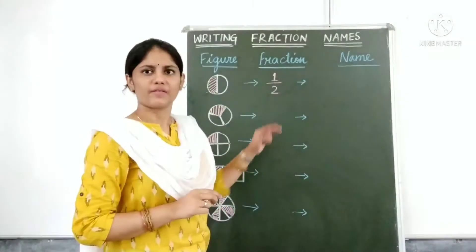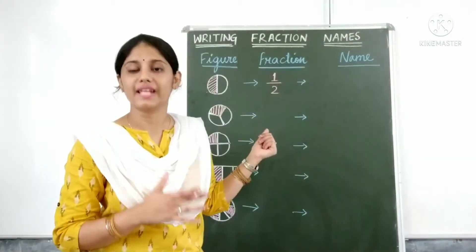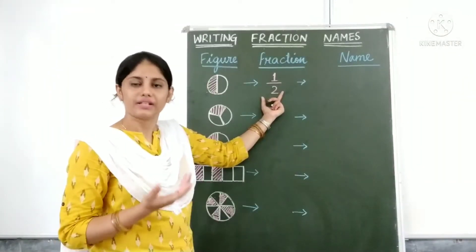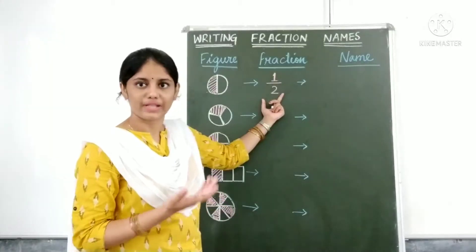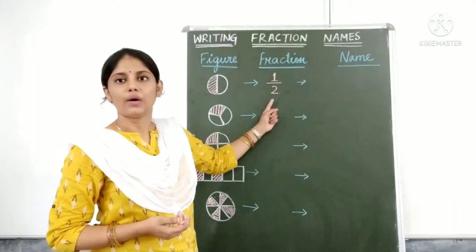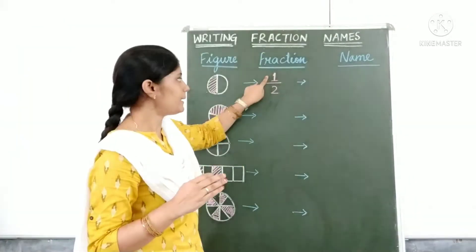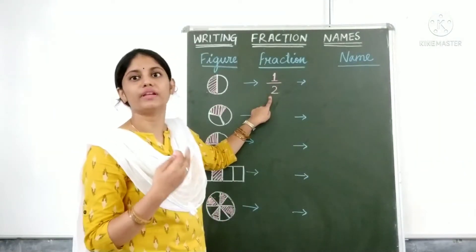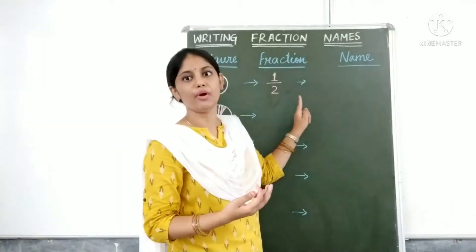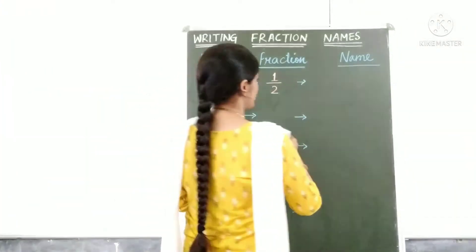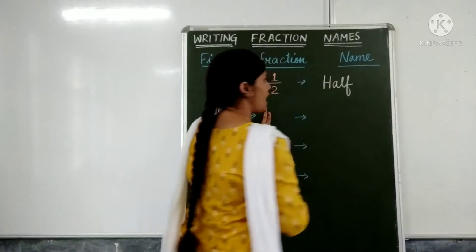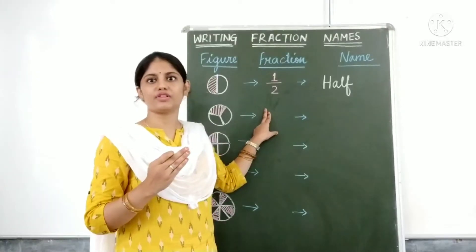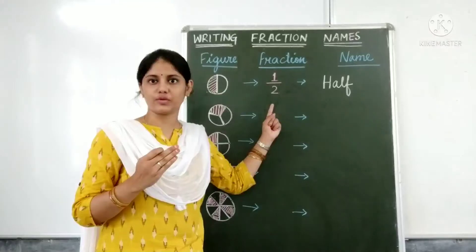What will be its name? We know how to write fractions, and now we are writing the name for the fractions. We can write either the fraction or we can write it by its name. We read it as 1 by 2. The name for the 1 by 2 fraction is half of whole. If we are asked to shade half of a figure, we shade 1 part out of 2, and the name is half.